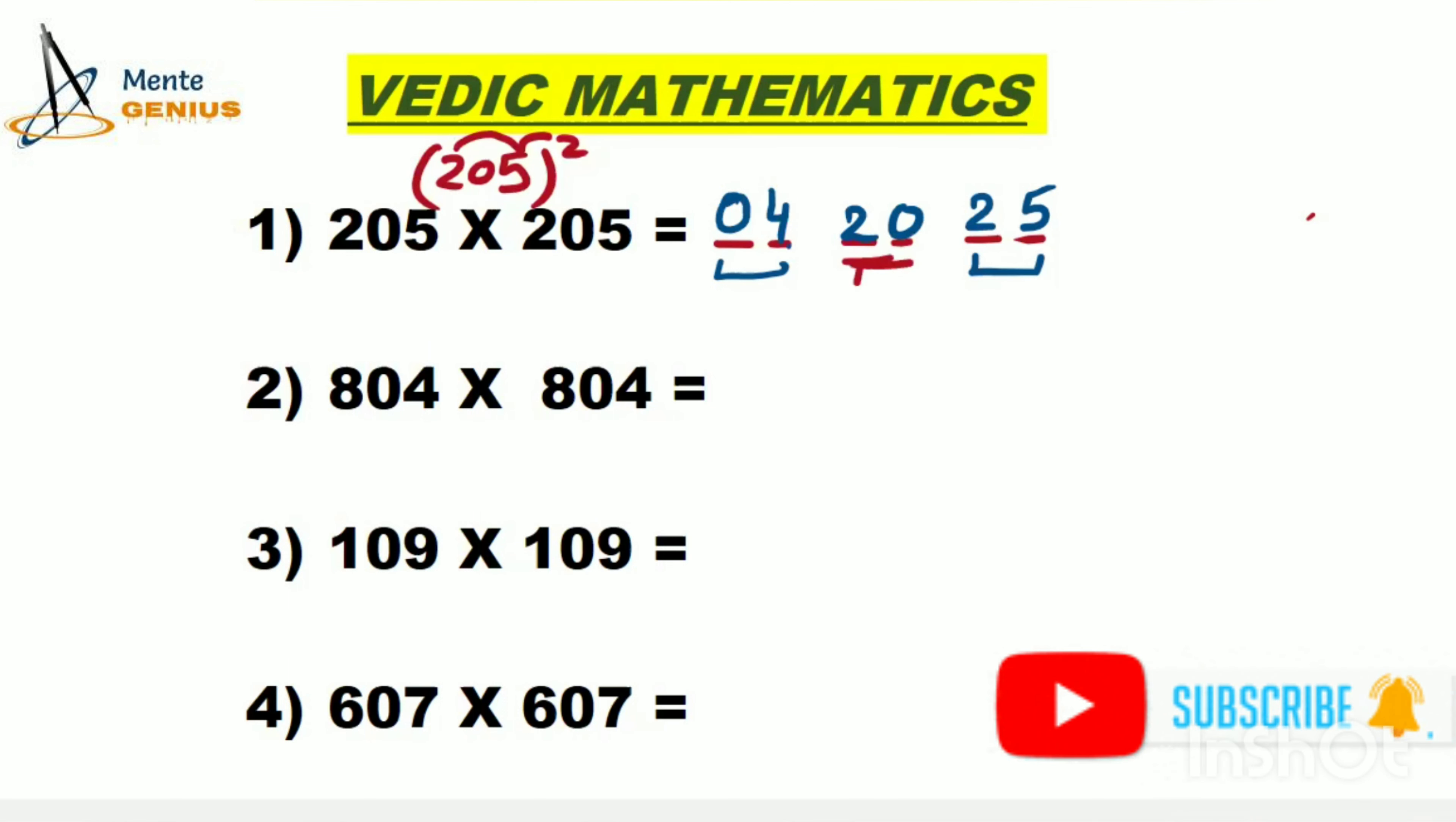This way we occupy all six places. Similarly, we'll solve the second question. You make six places: two first, two middle, and two last. For the first two places, square the first digit. 8 times 8 is 64.